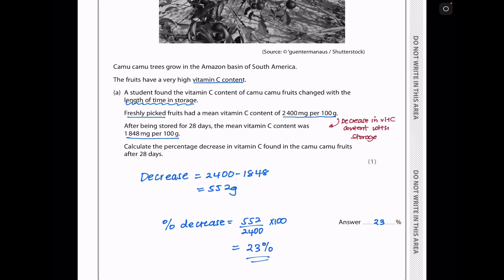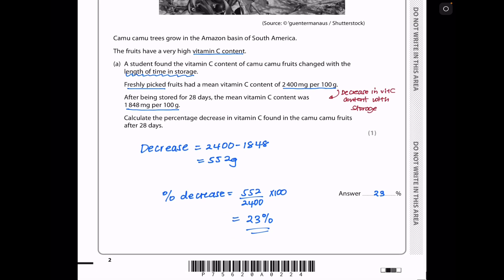They wanted to calculate the percentage decrease in vitamin C found in the kamukamu fruits after 28 days. To calculate the percentage decrease, we need to first find the decrease, which is going to be the original concentration minus the concentration after 28 days. So subtracting that and that, I got 552g. And the percentage decrease is 552 divided by 2400 times 100, giving me 23%.